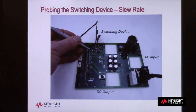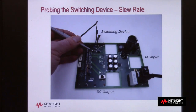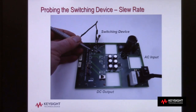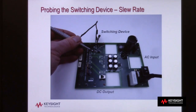The first task in making a modulation analysis measurement is to probe the gate terminal of our switching device. The gate pin is not normally accessible on this particular demo board, so I have removed the protective clamshell cover so that I can directly probe the gate terminal with a standard 10-to-1 passive probe.